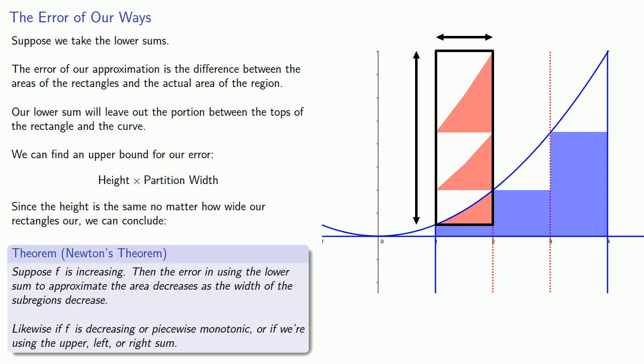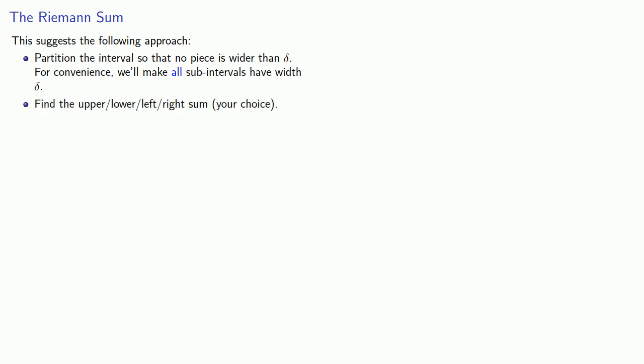So it really doesn't matter whether we use the upper sum, the left sum, the lower sum, or the right sum. Pick one and work with it. This suggests the following general approach. We'll partition the interval so that no piece is wider than some amount we'll call delta. For convenience, we'll make all of our subintervals have this width delta. And then we can find the upper, lower, left, or right sum, your choice. And as long as delta is small, the upper, lower, left, or right sum will approximate the area.